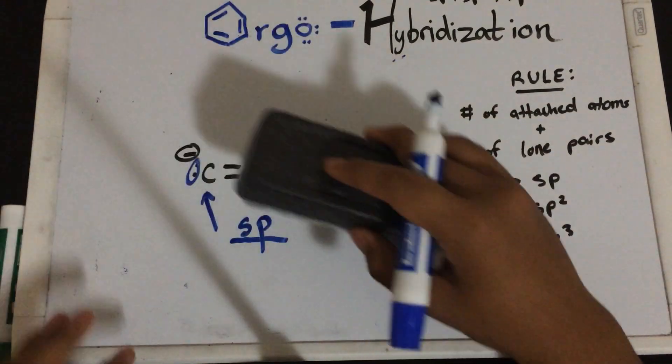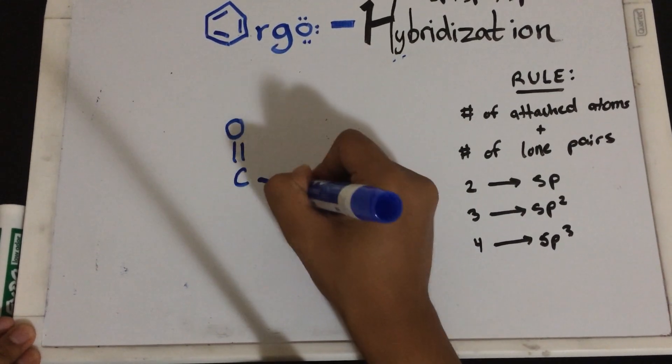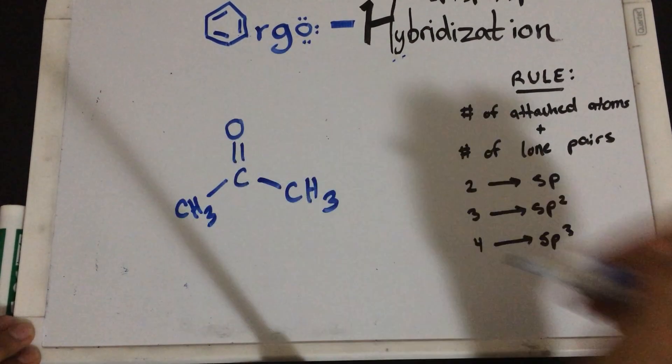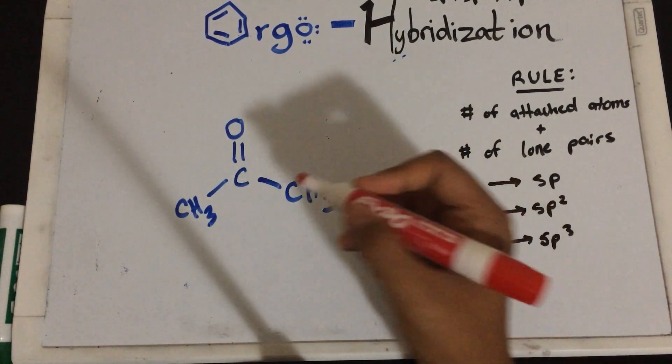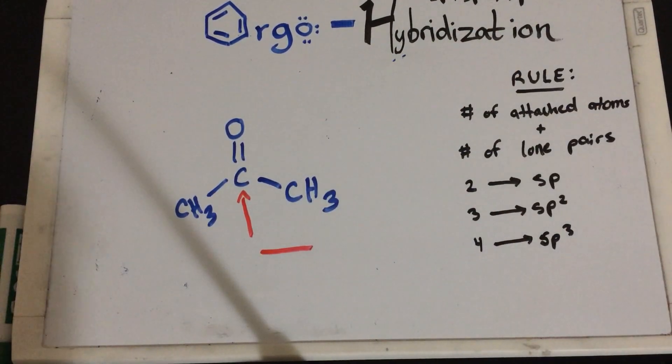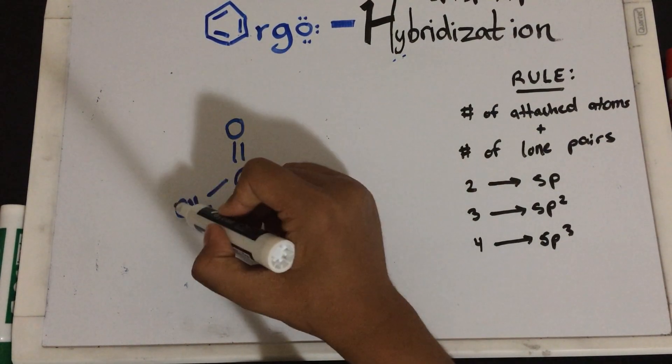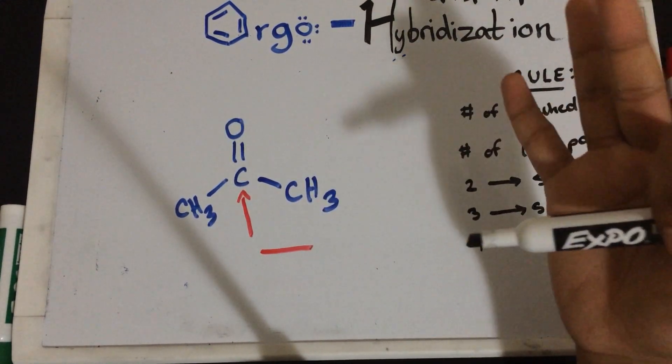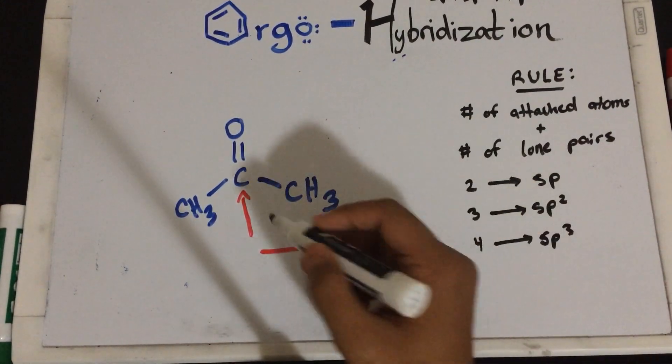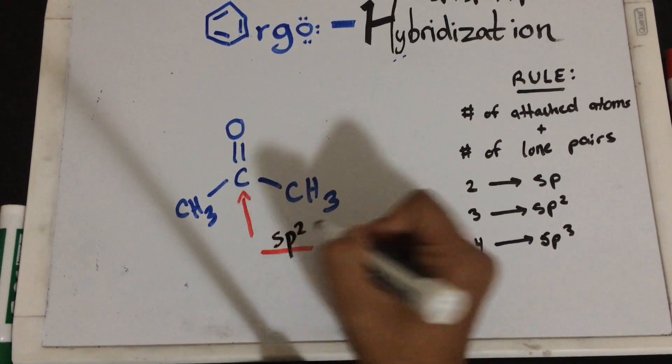Now, let's look at SP2 hybridization. Imagine on your exam, you're asked, what is the hybridization of this central carbon right over here? Again, just follow this simple rule. Number of attached atoms, well, this carbon, it's attached to this carbon, this carbon, and this oxygen. So, it's attached to three atoms. How many lone pairs does it have? Zero. So, it's attached to three, and no lone pair, so this is an SP2 hybridization.